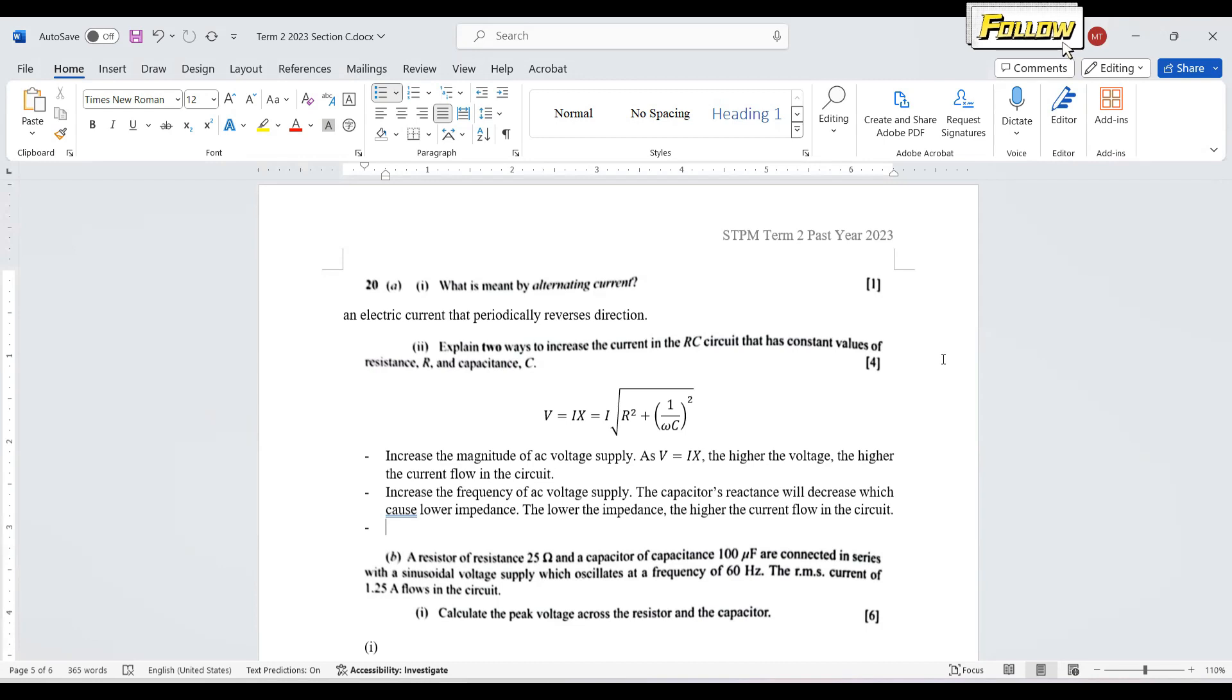The next thing is we can increase the frequency of the AC voltage supply, which is omega. Omega equals 2 pi F. So if we have higher frequency,